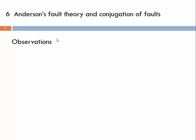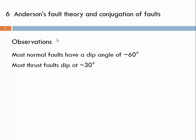Let's start with a few observations that are commonly made in the field. The first would be that normal faults very often have a dip angle of about 60 degrees. Thrust faults are usually shallow with dip angles at about 30 degrees, and strike-slip faults are very often vertical or near vertical.